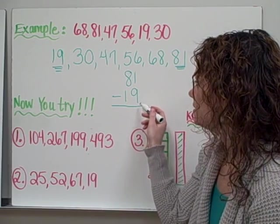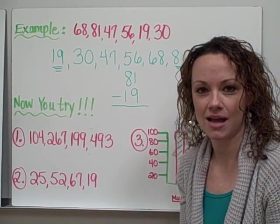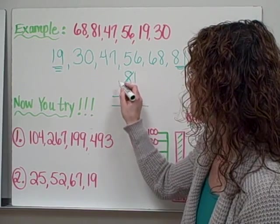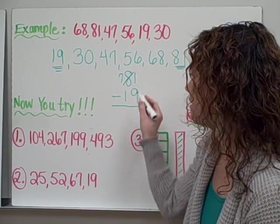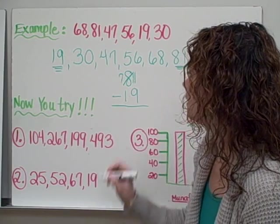We start in the 1's place. If I have 1, I can't take away 9, so I need to borrow from the 10's place. I'll cross out my 8, make it a 7, and my 1 becomes an 11.